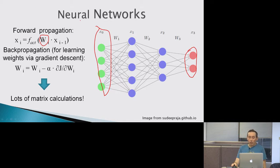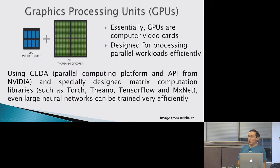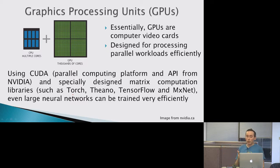Neural networks require a lot of matrix calculations, and those matrices can be quite large if you have many inputs and hidden layers. Most people use GPUs — graphics processing units — to speed up the calculations. A lot of people have GPUs, but not all are equally good.